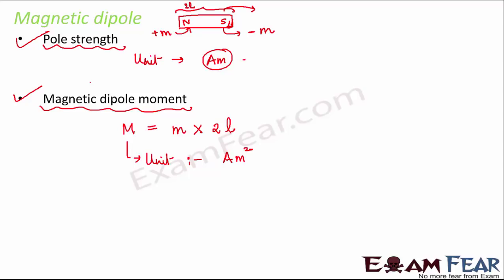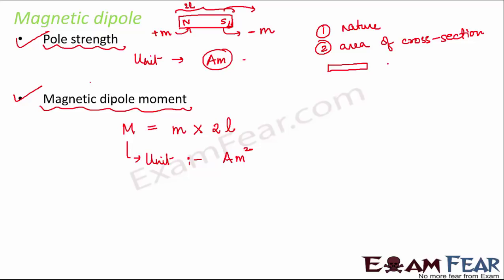As mentioned, pole strength depends on two things: the nature of the material and the area of cross section. So if you have magnetic dipoles of different shapes, as long as the area of cross section and the nature of material remain the same, the pole strength will also remain the same.